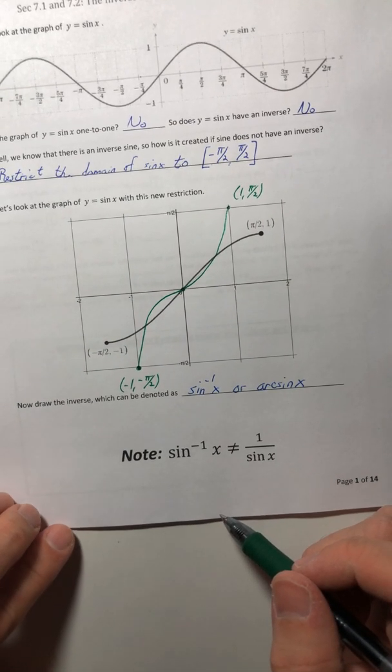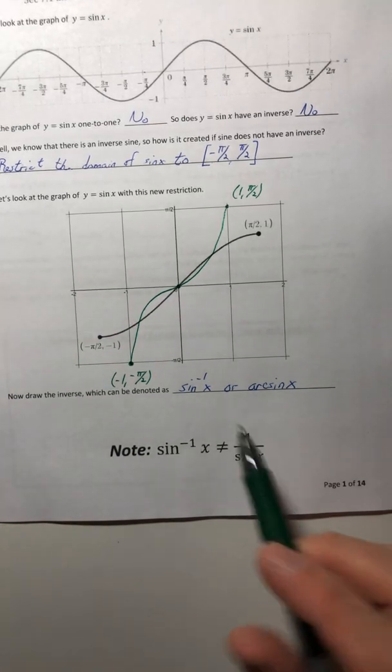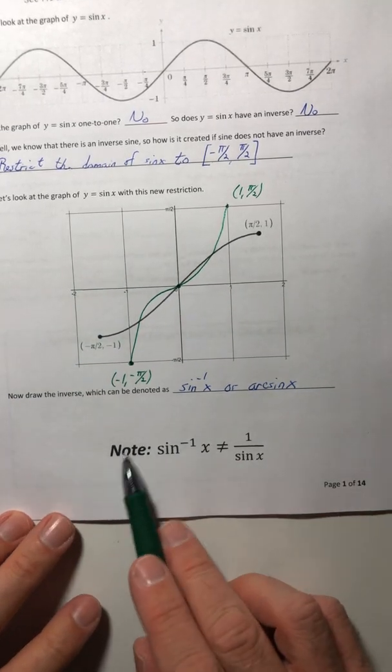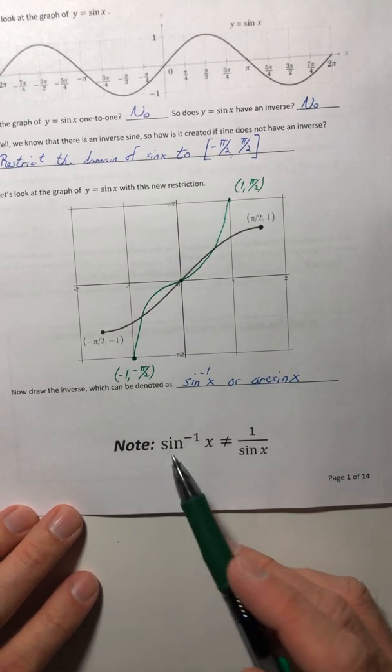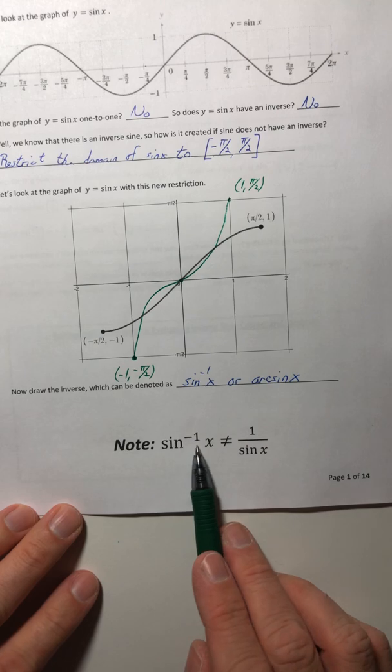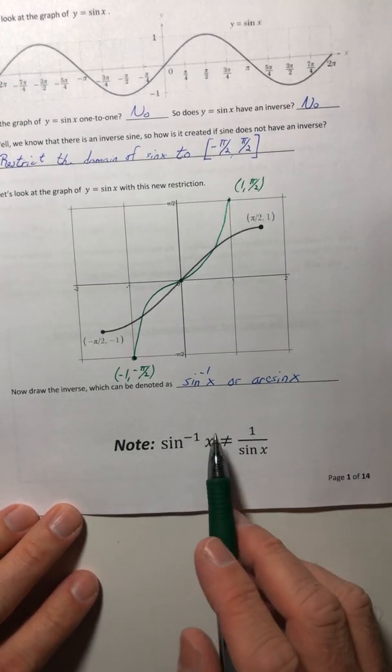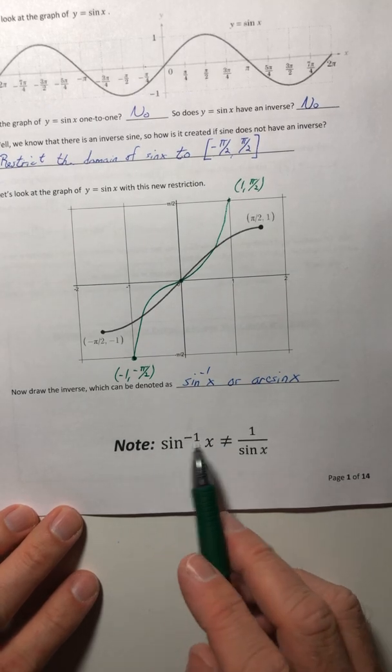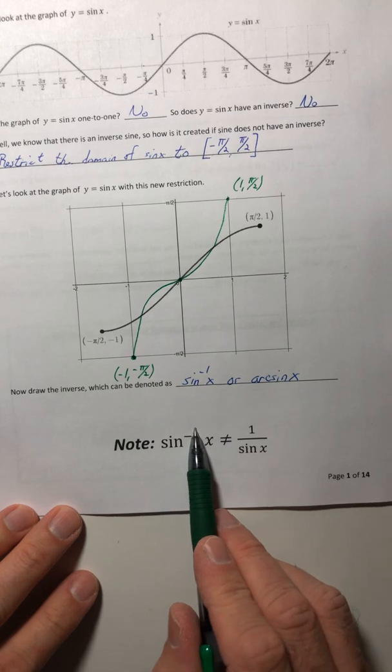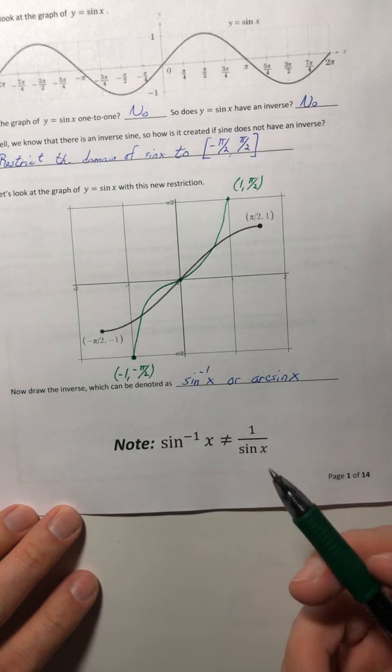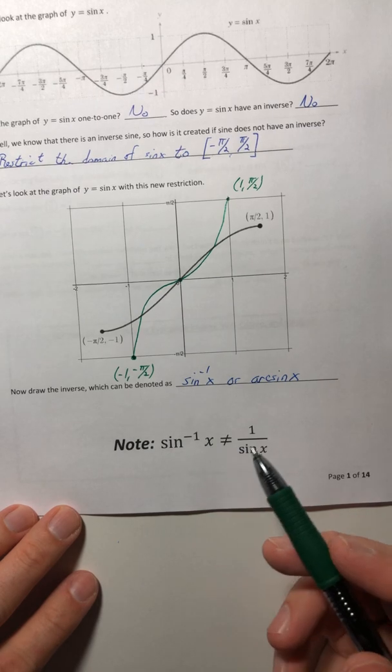And so that is the graph of inverse sine. One thing to denote or to note with the notation, just because I see it happen quite often. And that's dealing with this special inverse sine notation here. And, you know, I still get people, even in calculus, calculus two and three, like they just forget that this little negative one is not an exponent. It's that inverse notation, not an exponential notation.